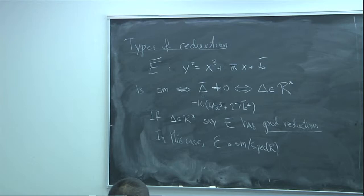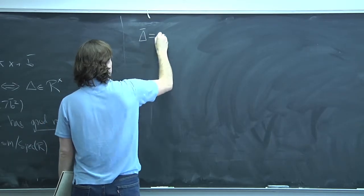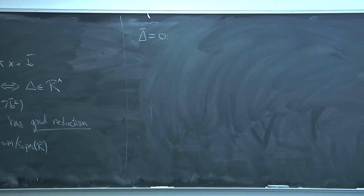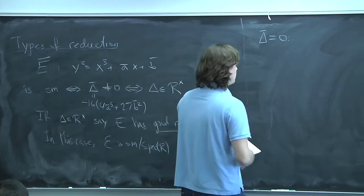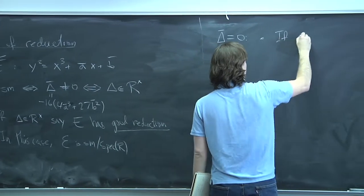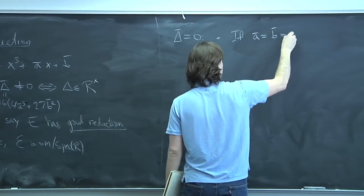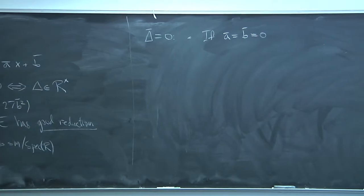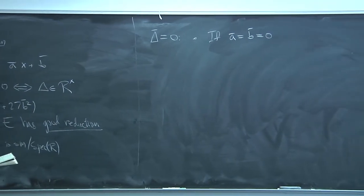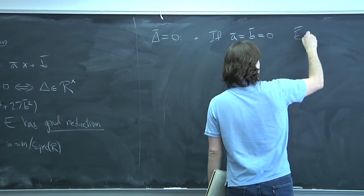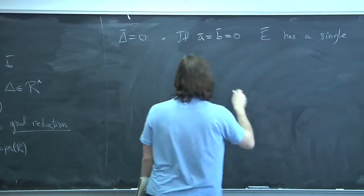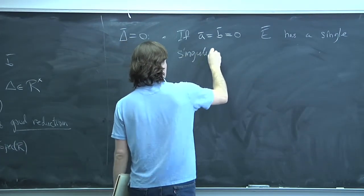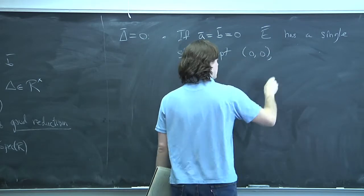But what if the discriminant is zero? Then Ē is singular. There are basically two possibilities — the discriminant detects whether roots are colliding, and either two roots can collide or all three roots can collide. If both ā and b̄ are zero, all roots collide, and the equation is just y² = x³. Then Ē has a single singular point at (0,0), and it's a cusp.